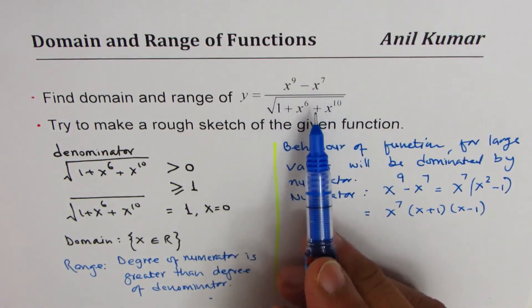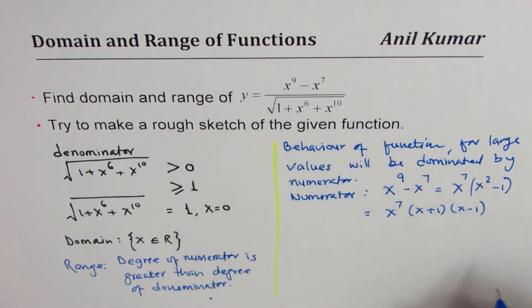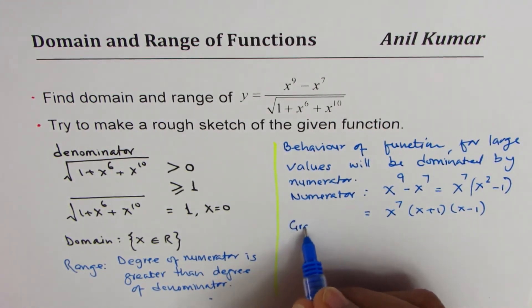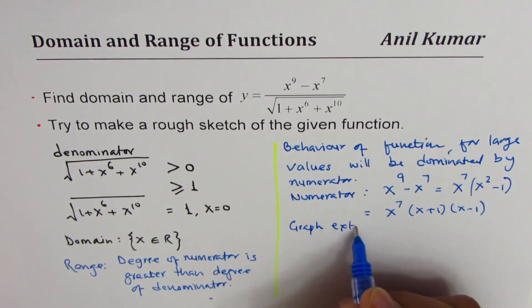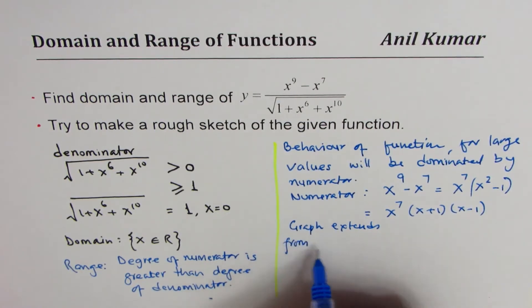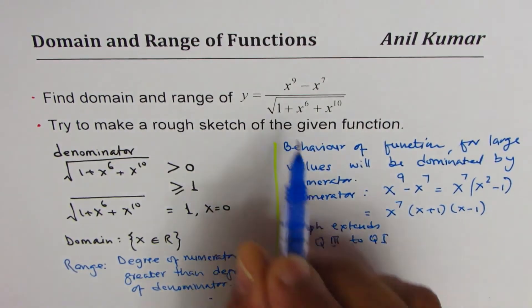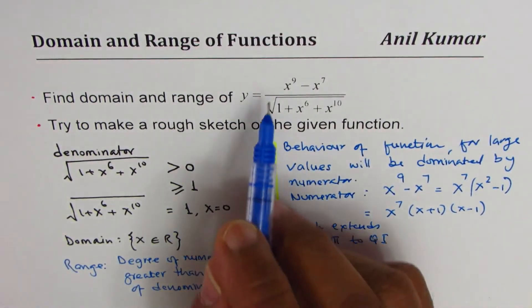We conclude that the graph of this function will move from quadrant 3 to quadrant 1, because of this. Graph extends from quadrant 3 to quadrant 1 because the leading coefficient is 1.